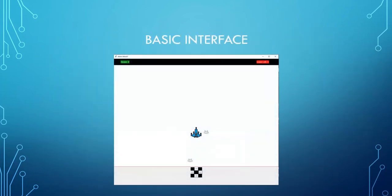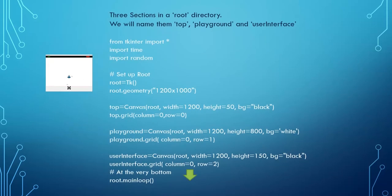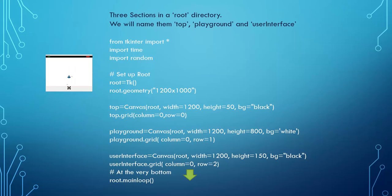So the basic interface is split up into three sections. We need to import tkinter, import time, and import random. We're going to create a root window with a geometry of 1200 by 1000, and three canvases at three different heights: the top one with a height of 50 in row 0, the second with a height of 800 in row 1, and the third with a height of 150 in row 2. It will need a main loop.